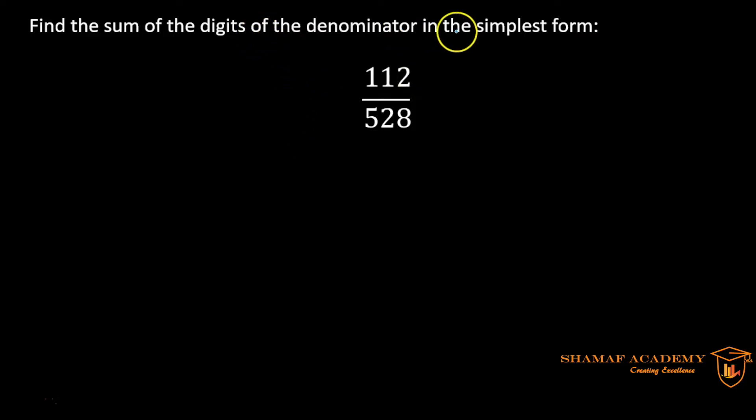We first need to find the sum of the digits of the denominator in the simplest form. So the first step that we need to do is find the simplest form, and the second step is state the sum of the digits of the denominator.